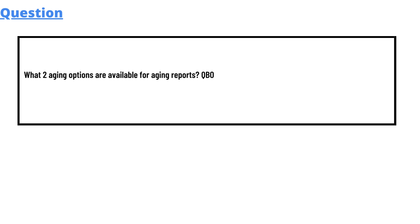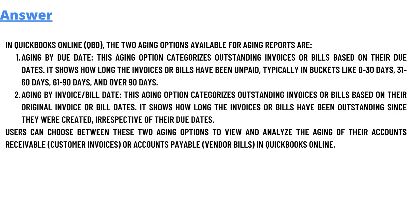The answer is that in QuickBooks Online, two aging options available for aging reports are aging by due date and aging by invoice or bill date. The aging by due date option categorizes outstanding invoices or bills based on their due date.